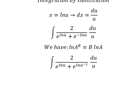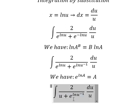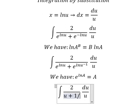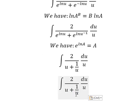Now we have the second formula: e to the power of ln A equals capital A. So we have u and one over u. u multiplied by one over u simplifies to 1.